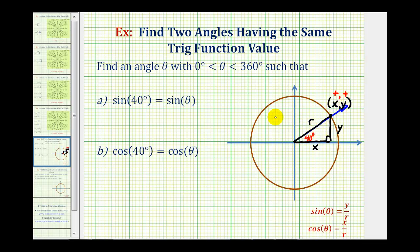We'll notice that y is also positive in the second quadrant. So if we sketch an angle that has a reference angle of 40 degrees in the second quadrant, it'll have the same sine function value.